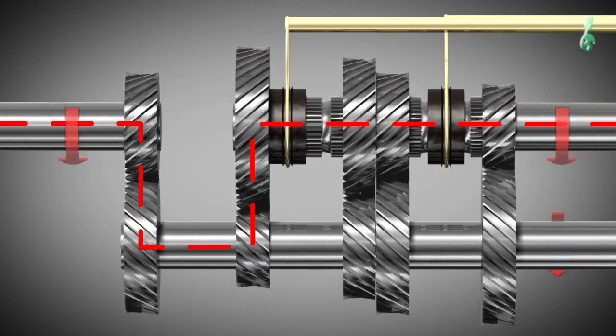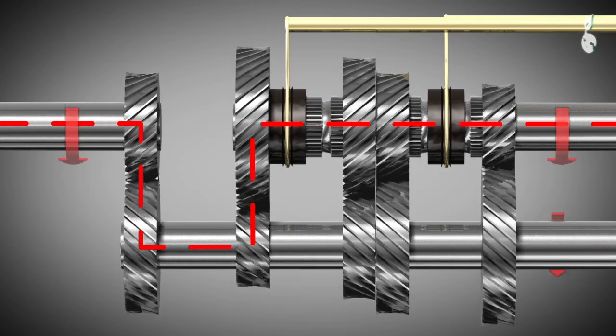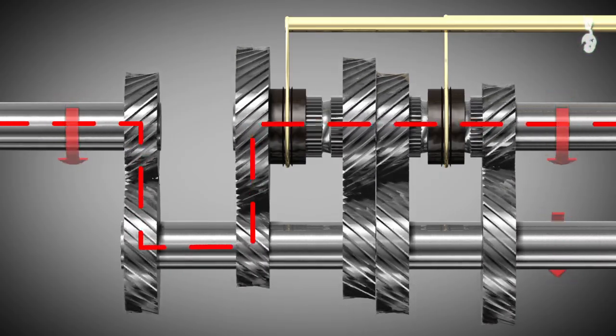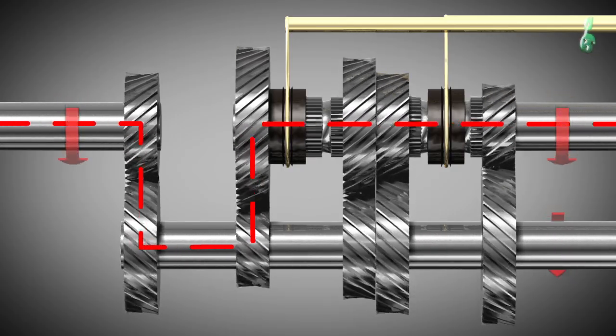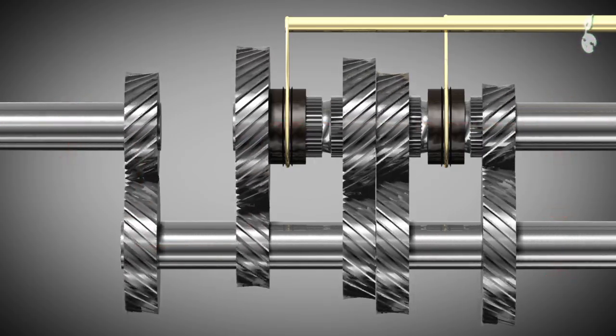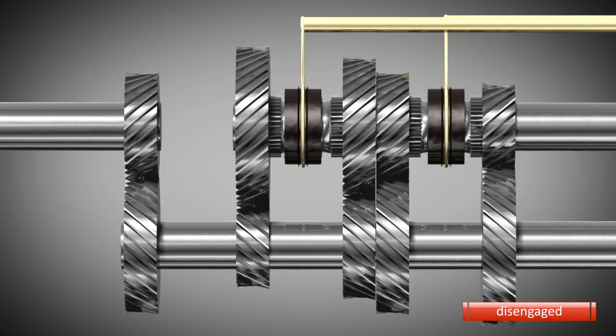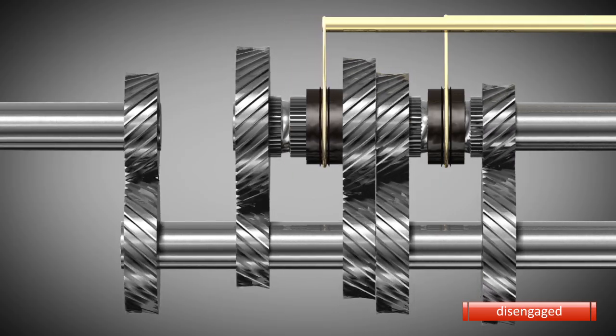Then, the transmission transfers the energy through the counter shaft and the output shaft to the wheels, so the vehicle begins to move. When the driver wants to shift from first gear to second gear, he or she must disengage the friction clutch. Then, the driver can shift gears without damaging the transmission.